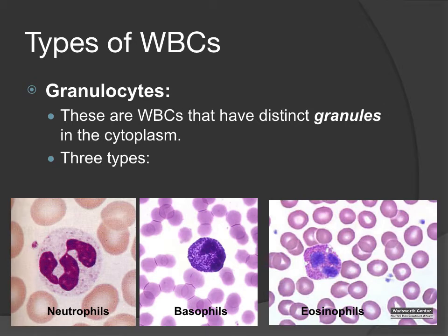Looking at these cells under the microscope, on the left we have a neutrophil with more neutral-colored granules and a multi-lobed eosinophilic to basophilic staining nucleus. In the center, the basophil has dark purple basophilic staining granules and another multi-lobed nucleus. On the right, the eosinophil has a multi-lobed nucleus with pink or eosinophilic staining granules. All three types show distinct granules characteristic of granulocytes.